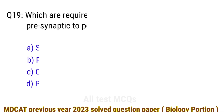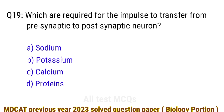Question number 19. Which ions are required for the impulse to transfer from a presynaptic to a postsynaptic neuron? The correct answer is option C: calcium.